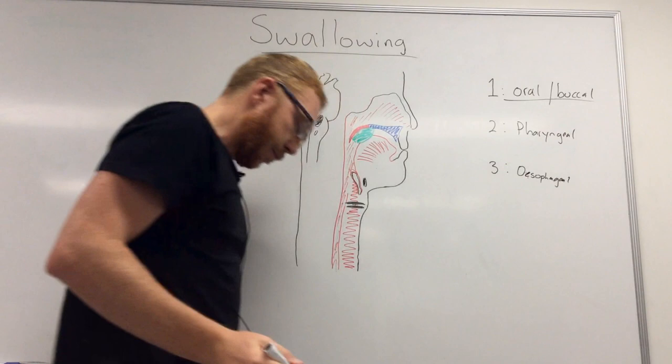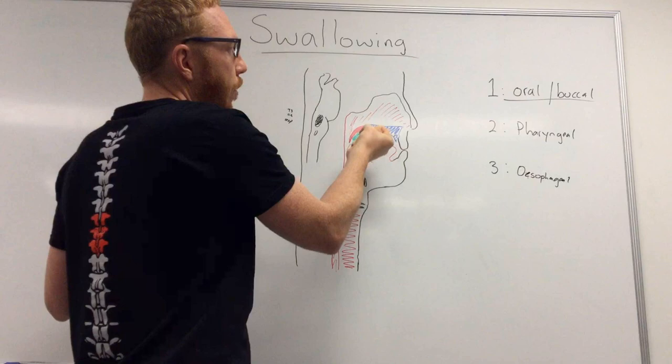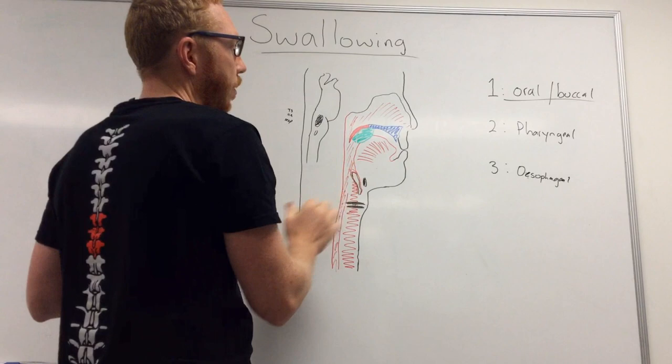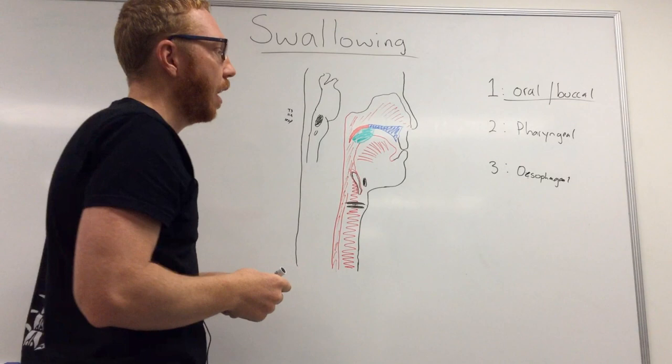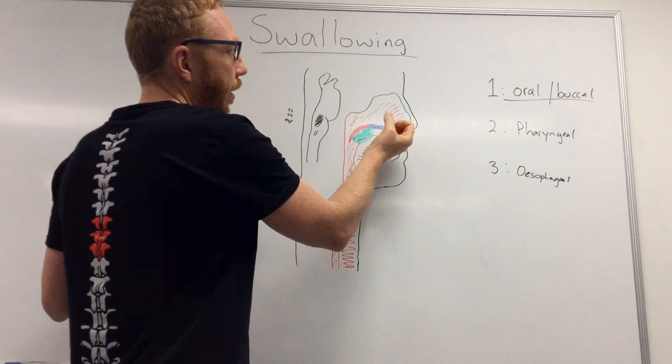Let's start with the oral or buccal phase. This is completely voluntary, controlled by your own volition. Food goes into the mouth, we use our teeth to break it up, and we start to form a bolus with lubrication from the salivary glands. The nerves coordinating this process are the hypoglossal nerve (cranial nerve 12), which innervates the tongue, and the mandibular branch of the trigeminal nerve, which innervates the muscles of mastication that move the jaw.